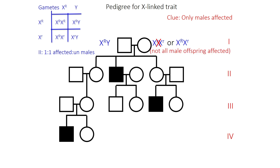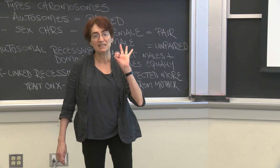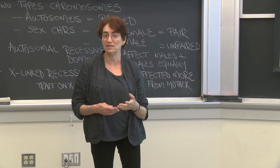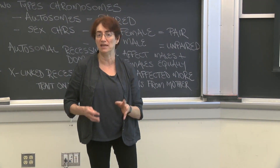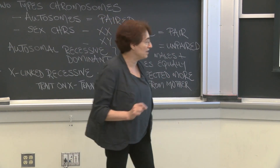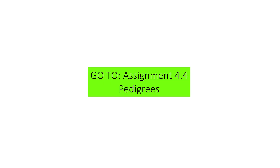We ruled out the little r, little r genotype for the mother, and that gives us our three types of pedigree characteristics: autosomal dominant, autosomal recessive, and X-linked recessive. There are a couple of other types you'll encounter in a more complete course, but this is enough for now. Take this information and go do assignment four for today, which has to do with pedigrees, and practice figuring out which type of pedigree you're seeing.